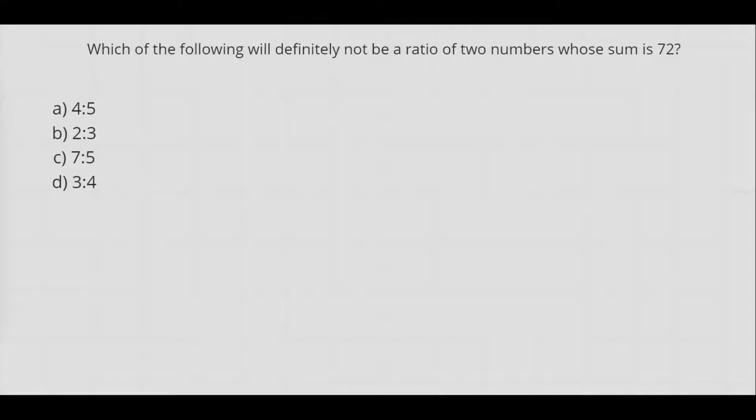This is a question on ratio and divisibility test. We have been given four options and we have to find out which of them are definitely not the ratio of two numbers whose sum is equal to 72.